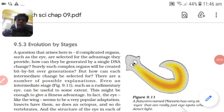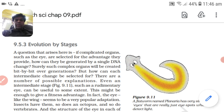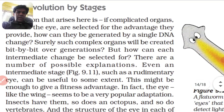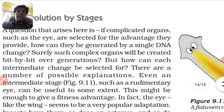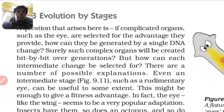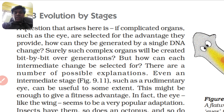Good morning class, hope you are doing well. Today we are going to learn about evolution by stages. A question that arises here is: if complicated organs such as an eye are selected for the advantage they provide, how can they be generated by a single DNA change? Surely such complex organs would be created bit by bit over generations, but how can each intermediate change be selected for?